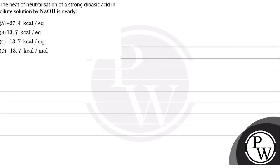Hello guys, let's read the question. The question says: the heat of neutralization of a strong dibasic acid in dilute solution by NaOH is nearly. Options are: minus 27.4 kilocalorie per equivalent, 13.7 kilocalorie per equivalent, minus 13.7 kilocalorie per equivalent, and minus 13.7 kilocalorie per mole.